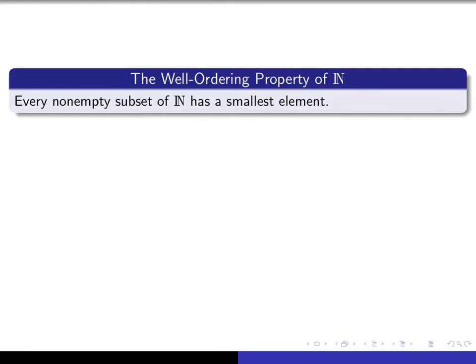The other property of the natural numbers I want to bring to your attention is known as the well-ordering property of the natural numbers. It is very simply stated: every non-empty subset of the natural numbers has a smallest element. It seems like a completely obvious and elementary property — more elementary than PMI or PCI — but it actually turns out to be logically equivalent to the other two.